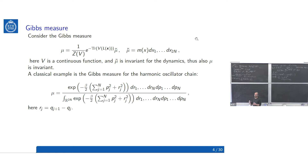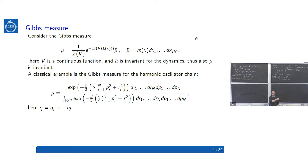I'm interested in the statistical properties of these classical integrable models, and for this reason we introduce a measure. The classical one is a Gibbs measure, which looks like this for integrable systems: the exponential of minus the trace of some potential of the Lax matrix times an invariant measure. One classical example is the Gibbs measure for the harmonic oscillator chain — something everybody knows from statistical mechanics — and you can also include other conserved quantities related to the harmonic oscillator chain.